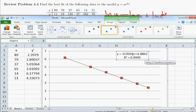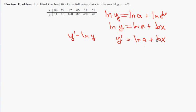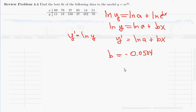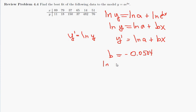So the thing that multiplies x is going to be the value of b, which we see here. And so in our model, b is equal to, I believe it was negative 0.0504. And then the intercept 6.8862 is going to be natural log of a. So we read off the slope and read off the intercept.